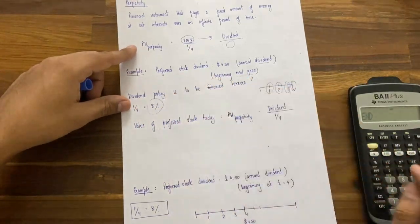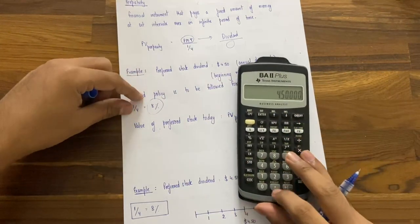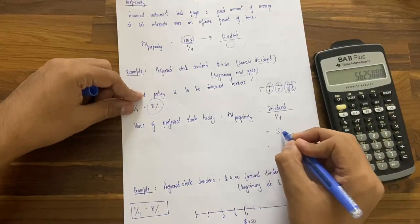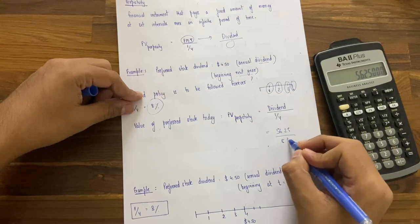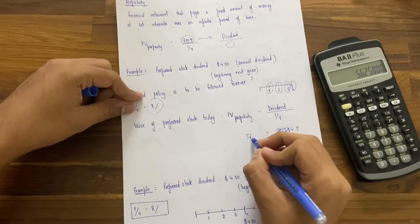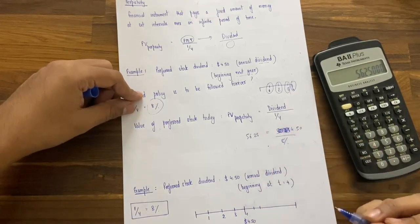The I/Y we have is 8%. So the dividend is 4.5, we will have to divide it by 8%, that is 0.08. So it turns out that the value of the perpetuity stock is somewhere around 56.25. 56.25 is our regular dividend.